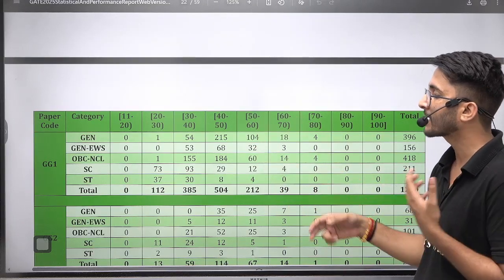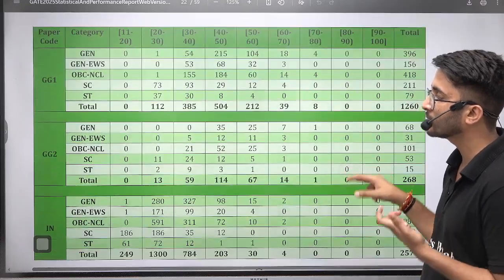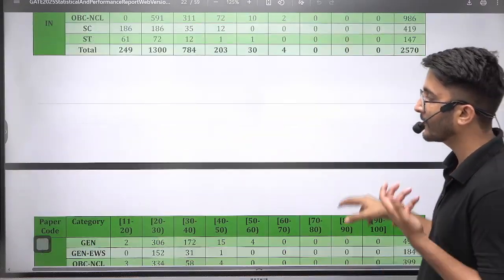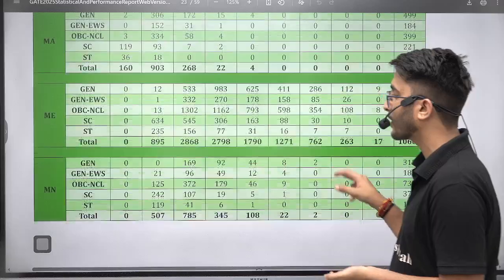If you are getting 50 marks, then only 16 students are above you by observing this data, and then you are able to apply in PSUs because if the vacancies are 25, it means you have a high chance to get a call from there.